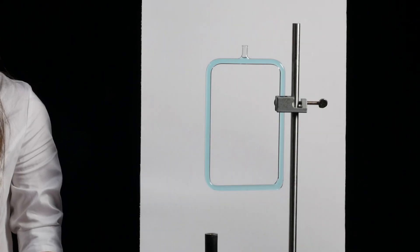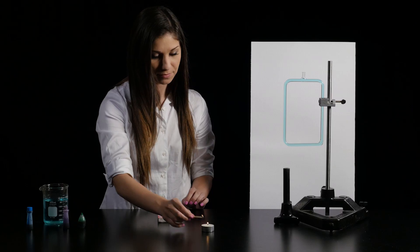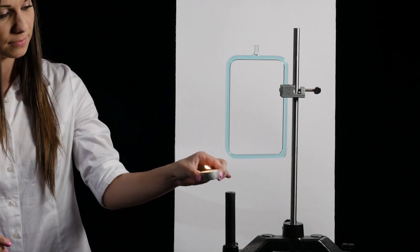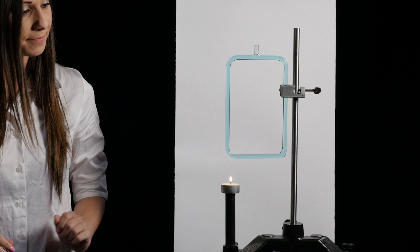This square tube is full of ordinary tap water. A candle is used to heat just the left side. As the water is heated,